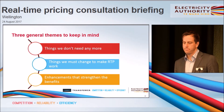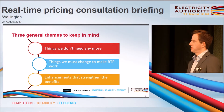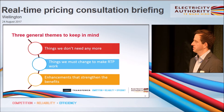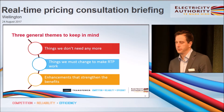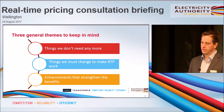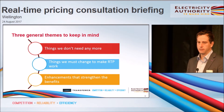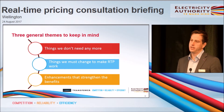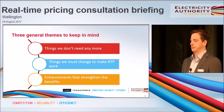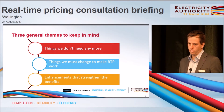That was the general overview. Now we'll step through more detail. I thought it was useful to keep in mind three general themes: first, a whole set of things we don't need anymore; second, things we have to change in order to make RTP work in the way we've proposed; and third, a few enhancements that we don't strictly need for RTP to work but that would strengthen the benefits — worth doing while we've got the hood up.